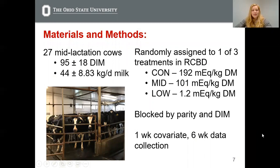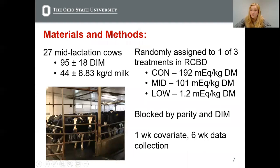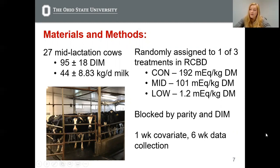For this study, I used 27 mid-lactation cows that were about 95 days in milk and producing about 45 kilograms of milk per day. They were randomly assigned to one of three treatments in a randomized complete block design. The first treatment was a control with a typical lactating DCAD of about 192 milliequivalents per kilogram of dry matter, the mid with 101, and the low with 1.2 milliequivalents per kilogram of dry matter. They were blocked by parity and days in milk and kept on trial for seven weeks, including one week of covariate and six weeks of data collection. Data were run in SAS 9.4 using a mixed procedure, with linear and quadratic polynomial orthogonal contrasts performed using block as the random effect and treatment, time, and time-by-treatment interactions as fixed effects.